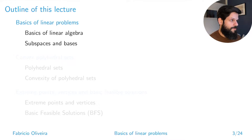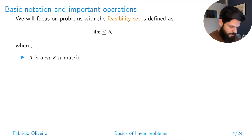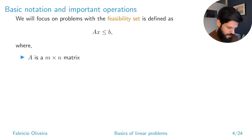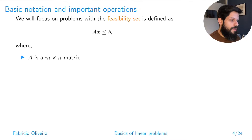This first video is about basics of linear problems. We'll start with a brief recap to get everyone on the same page. We have a feasibility set defined by a collection of linear expressions, using matrix notation where each row of the matrix represents a constraint. We have m constraints in our problem involving n variables.